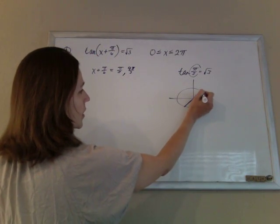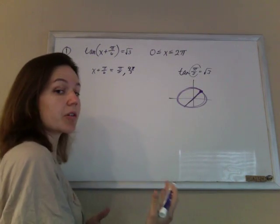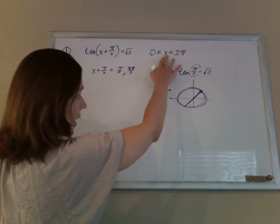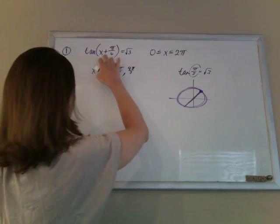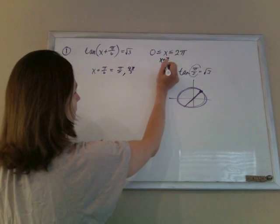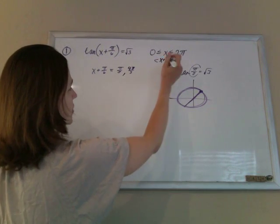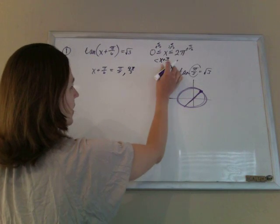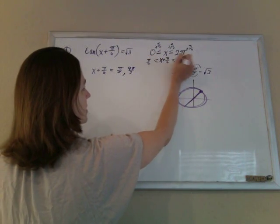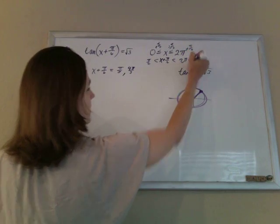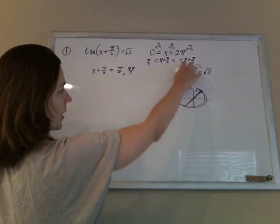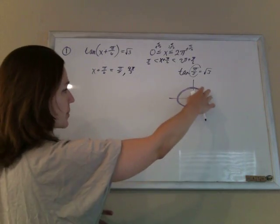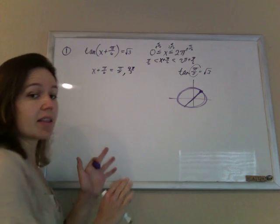And then remember, you can add 2 pi as many times as you want to your angle and get to the same place. So technically, I could have an infinite number of things, but I'm restricted. I know that x is supposed to be between 0 and 2 pi. I know that x plus pi 6 has to be between pi 6 and 2 pi plus pi 6. So if I added 2 pi to this guy here, I would already be bigger than 2 pi plus pi 6. So these are the only two angles that are in that range.